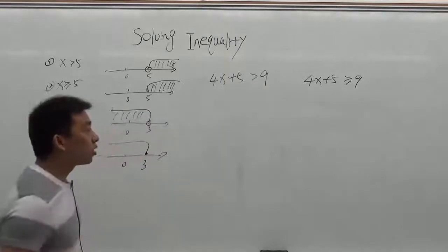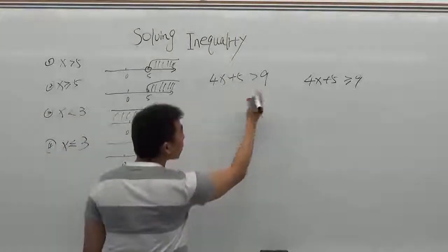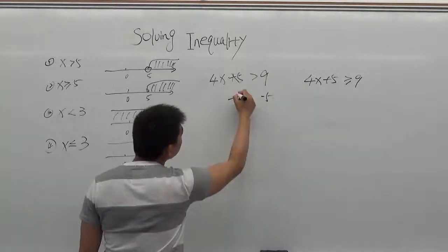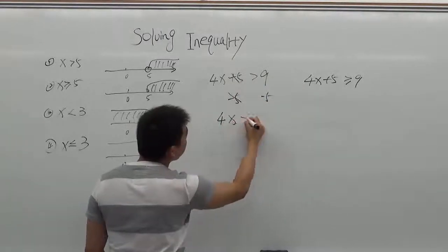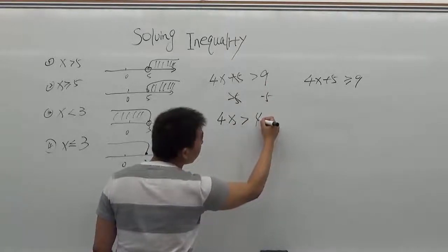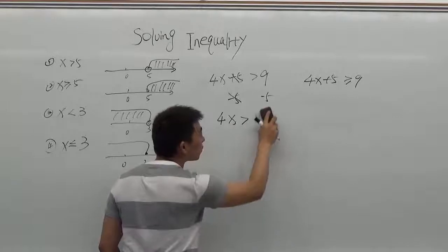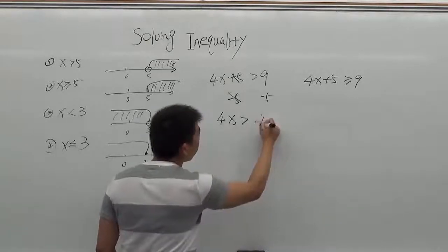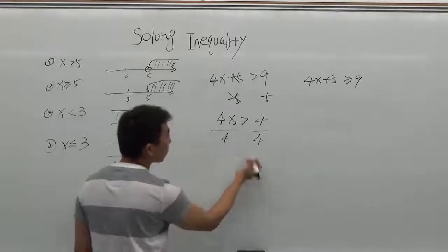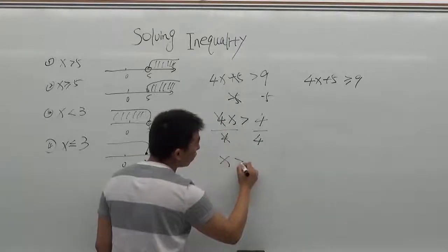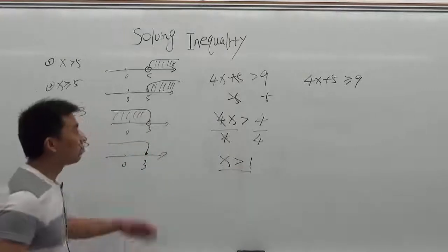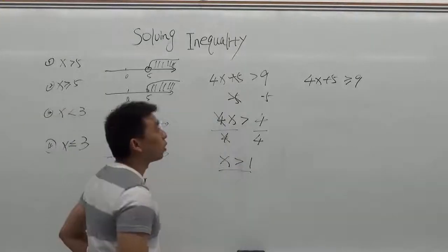I'll show you the steps how to solve them. For the first one, 4x plus 5 greater than 9: there is a plus 5, so subtract 5 from both sides. The 5s cancel out, giving 4x greater than 9 minus 5, which equals 4. Then divide by 4 for both sides — the 4s cancel — giving x greater than 4 divided by 4, which is 1. So x greater than 1.